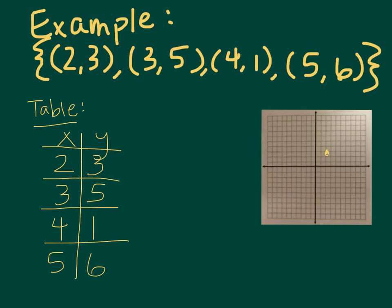Then we're going to go over 3 and up 5, and we're going to put another point. Sorry, mine aren't very exact. And we go over 4 and then up 1, and we put a point.